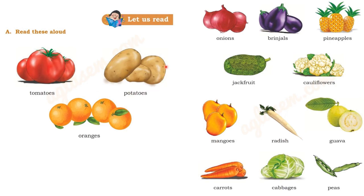What are these? These are tomatoes. Then we have potatoes, then oranges. Can you see how they are all different from each other? Then we have onions, brinjals, pineapples, jackfruit, cauliflowers, mangoes, radish, guava, carrots, cabbages, and peas.